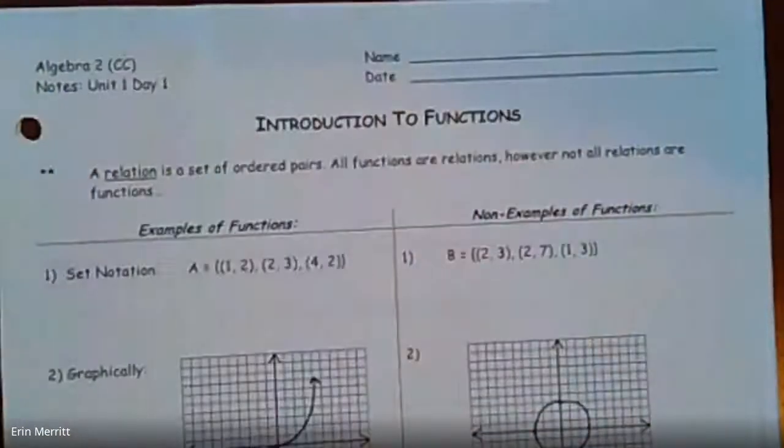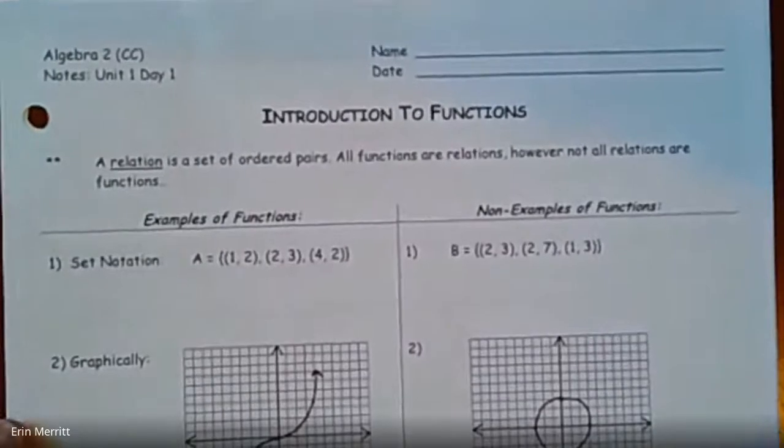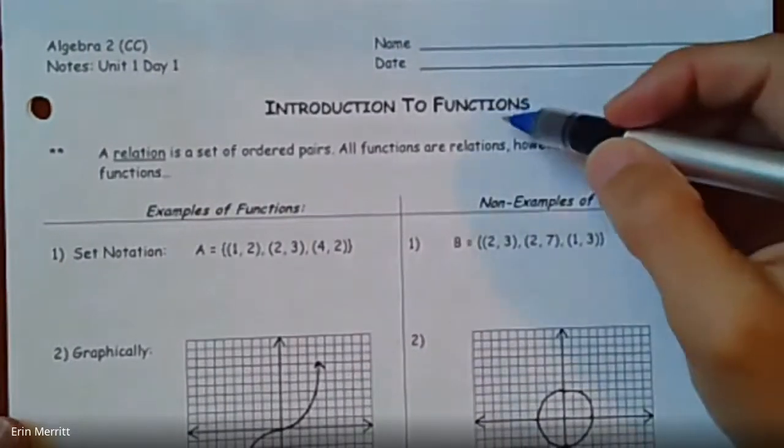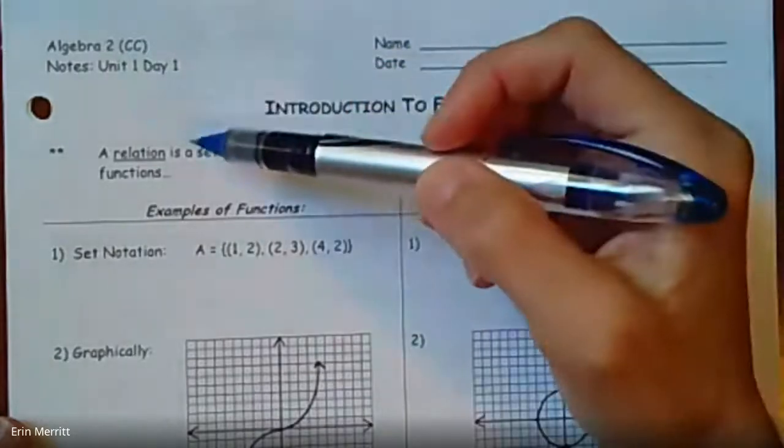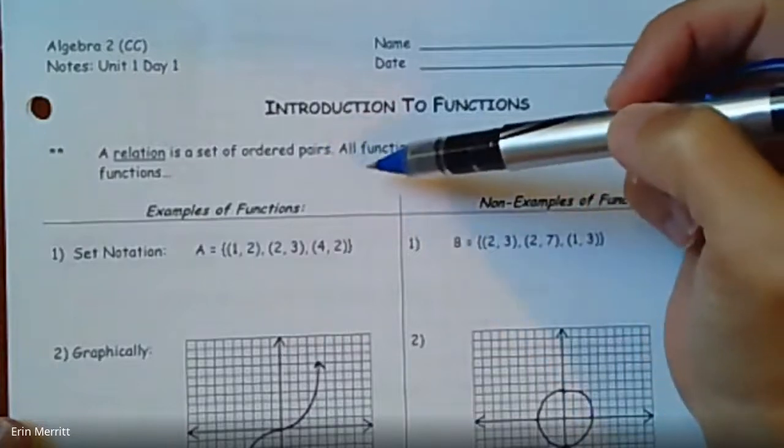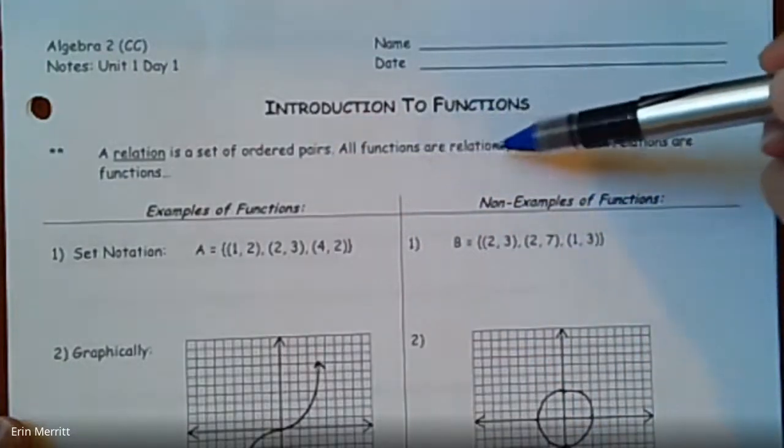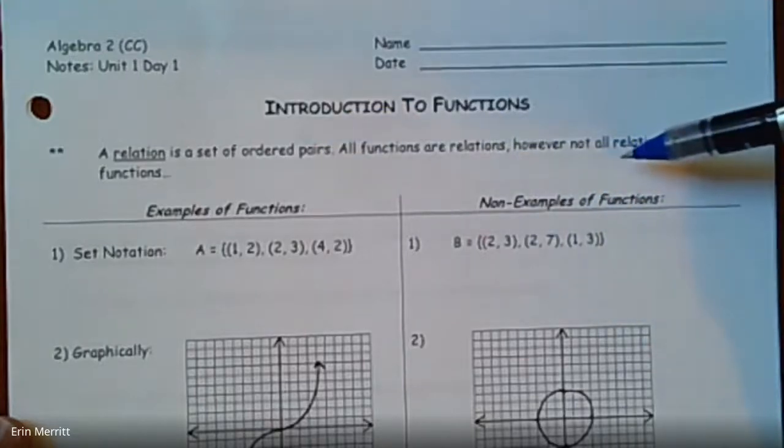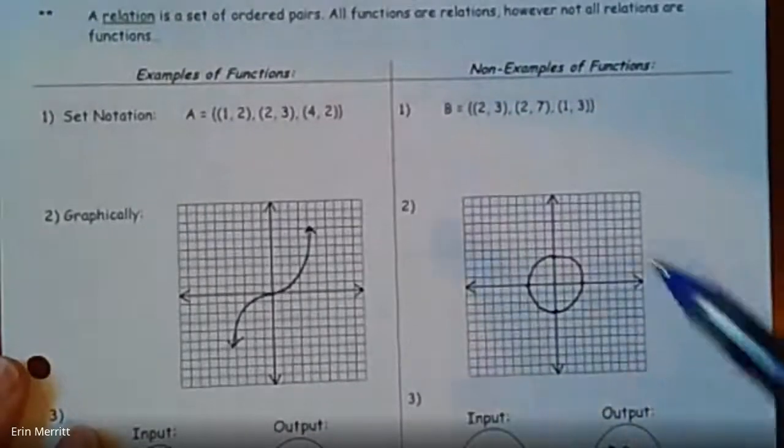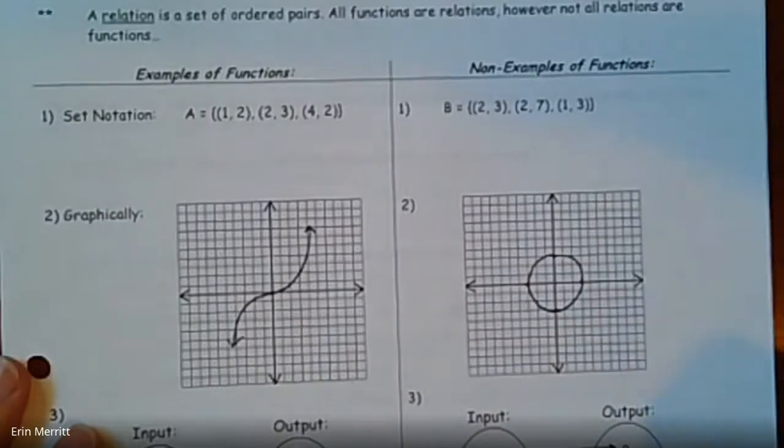So with day one, where we start with are just examples of what counts as a function versus what does not. That kind of helps clarify what are we talking about. Before we talk about function specifically, a more general category, a relation, that's just a set of ordered pairs. So basically any set of like XY points. So all functions fit into the category being a relation, but not necessarily the other way around.